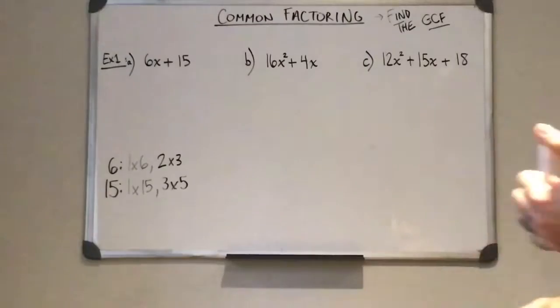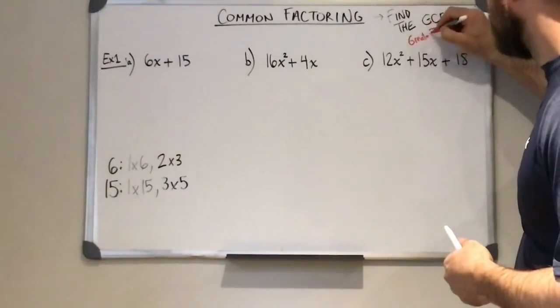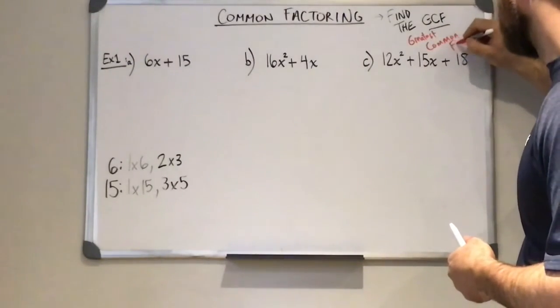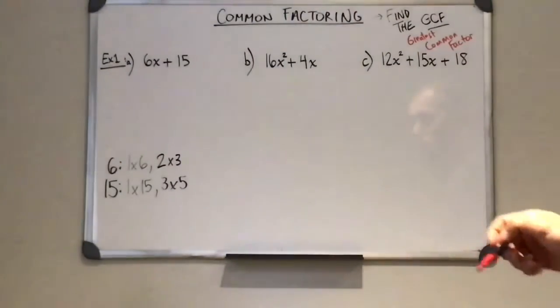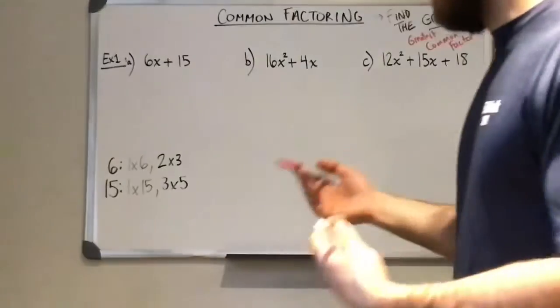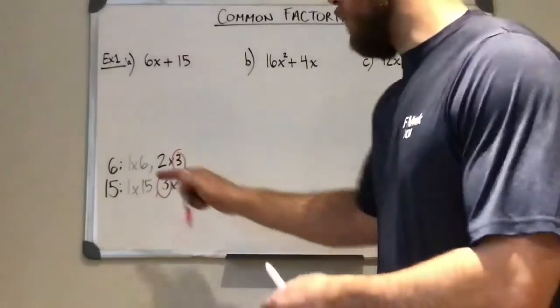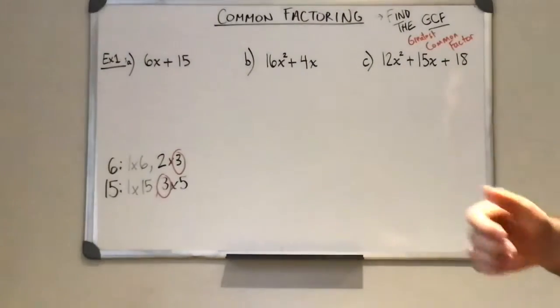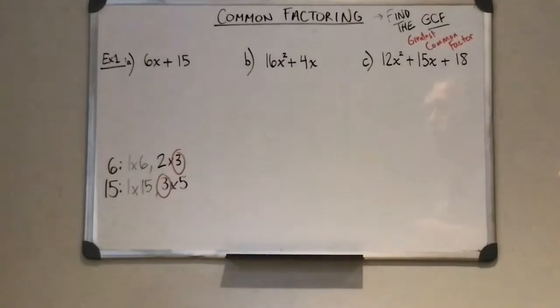So when I find the greatest common factor, I am trying to find the biggest number that's in those two lists. Okay, so the biggest common number. So for me, I see that 1 is common to both, but 3 is the biggest common number. So what we can do then is divide it out of both terms. And this is what common factoring is.